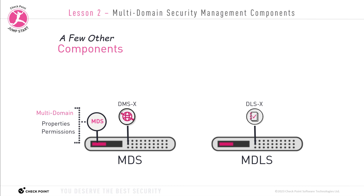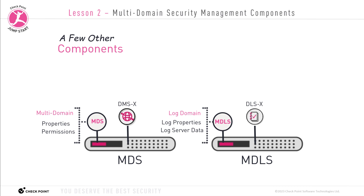This will be discussed in more detail later in this course. For now, just know that the MDS server houses the MDS container — its folders and properties — and also stores all the DMS domain management servers and their data. These same attributes also apply to the MDLS server. The MDLS server houses the DLSs and also has its own main container that houses all the multi-domain log server data, including information about which DLS servers it has and which domains manage those DLSs.